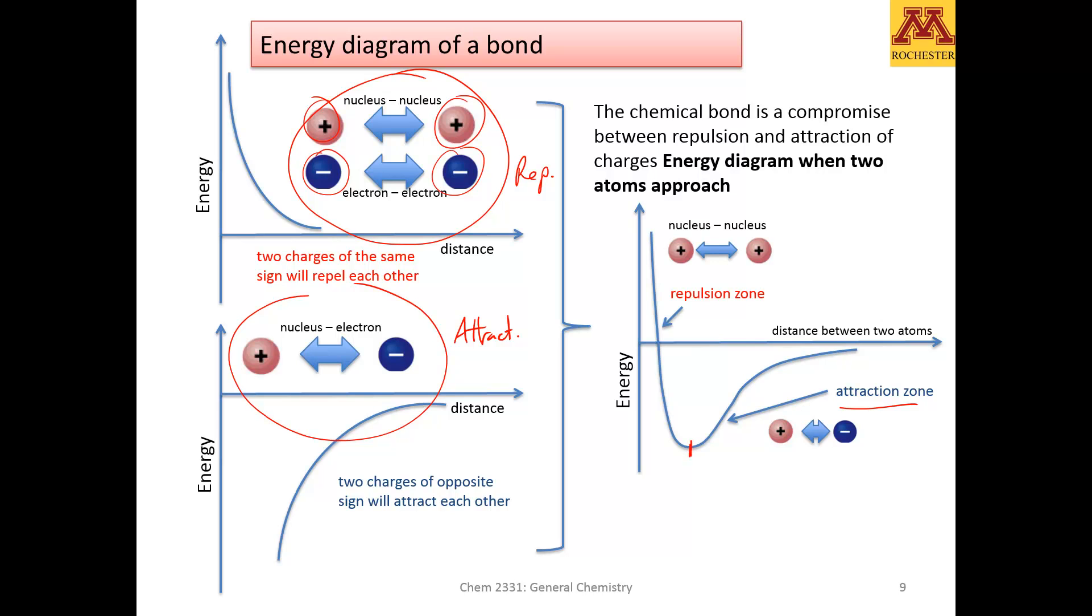And that point, it's right here, when the repulsion zone starts kicking in. So that point that is the most attractive, but the repulsion has not started kicking in or started increasing, that's what we call the bond distance. This is the bond distance.